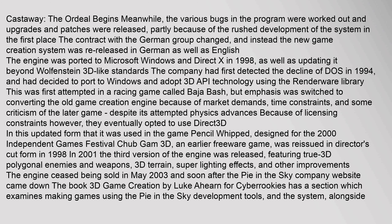The contract with the German group changed, and instead the new game creation system was re-released in German as well as English. The engine was ported to Microsoft Windows and DirectX in 1998, updating it beyond Wolfenstein 3D-like standards. The company had first detected the decline of DOS in 1994 and decided to port to Windows and adopt 3D API technology using the RenderWare library. This was first attempted in a racing game called Baja Bash, but emphasis was switched to converting the old game creation engine because of market demands, time constraints, and criticism of the later game despite its attempted physics advances.